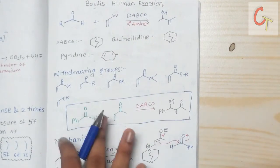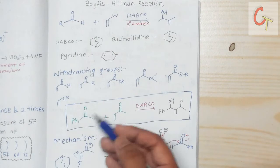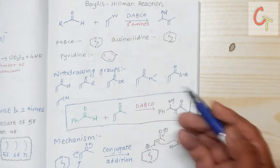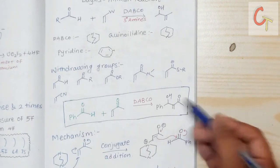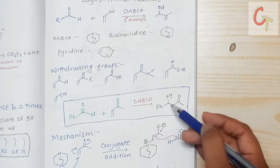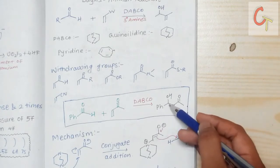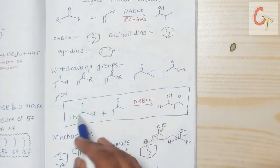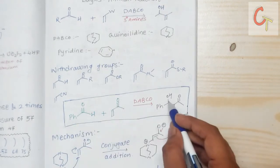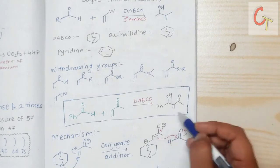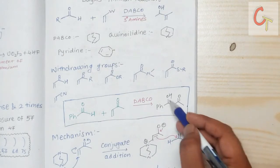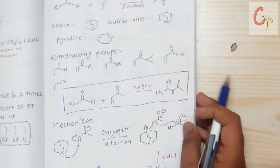Let's take an example: benzaldehyde reacts with methyl vinyl ketone in the presence of DABCO, which gives the C-C bond formed product, where the new C-C bond is formed between this carbon and this carbon, giving a hydroxy group present at the alpha position.